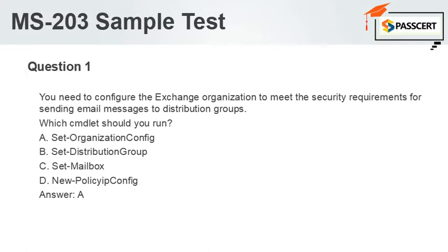Question 1. You need to configure the Exchange organization to meet the security requirements for sending email messages to distribution groups. Which cmdlet should you run? A. Set-OrganizationConfig. B. Set-DistributionGroup. C. Set-Mailbox. D. New-PolicyTipConfig. Answer: A.